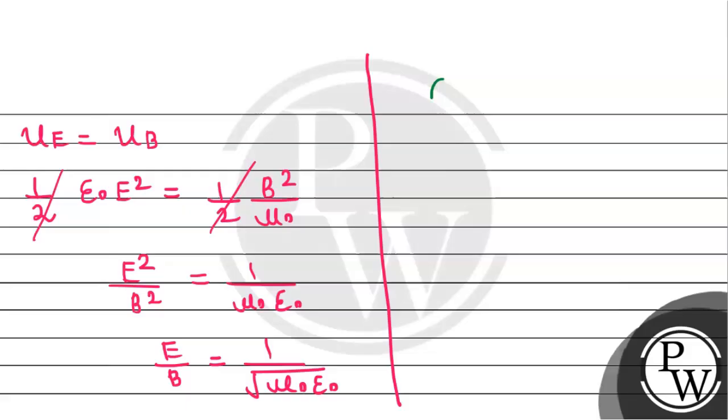Now we remember that the speed of light can be given as the formula one by under root mu naught epsilon naught. So we can say that magnitude of electric field by magnitude of magnetic field in current ratio is equal to the speed of light or velocity of light in free space.